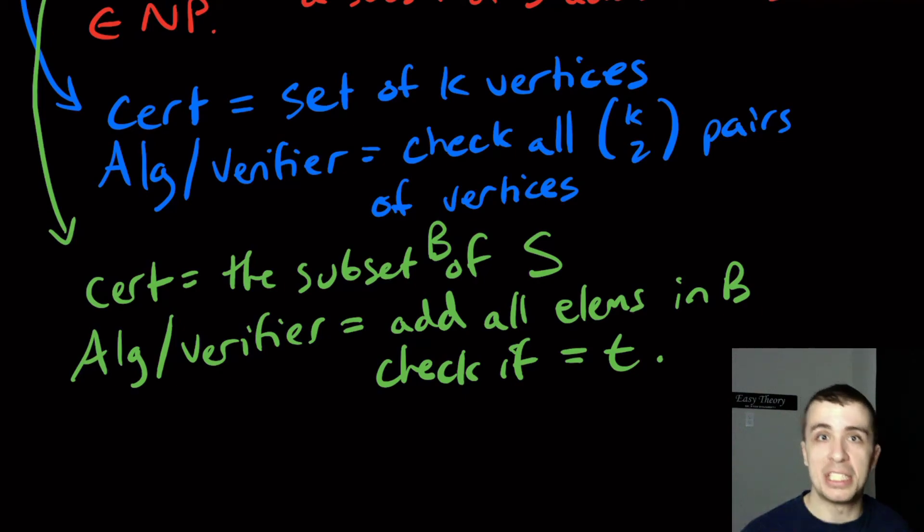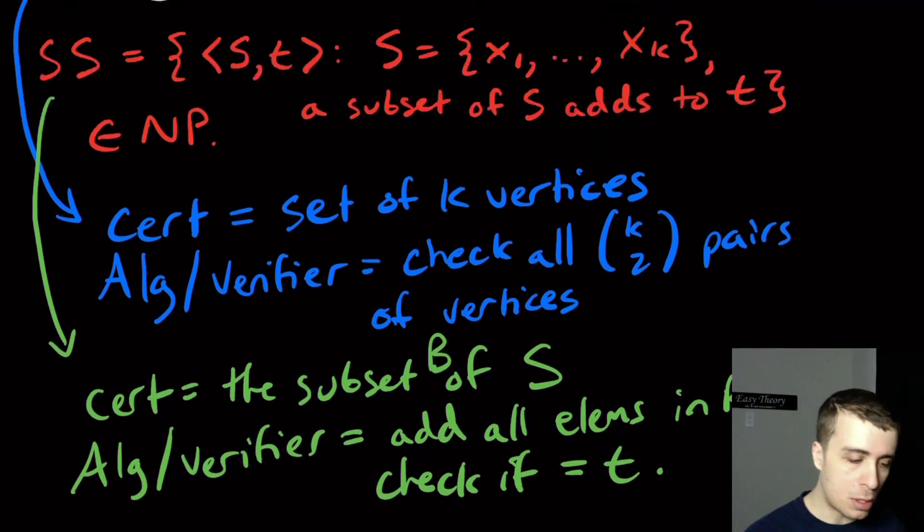If it was just say t and no other stuff, then we would have to worry about the representation of t, whether it's in unary base one or base two, and that's a big question when we deal with this type of thing. But since we have a gigantic set of integers right here compared to just one integer, it's not an issue here. So therefore we have shown that CLIQUE and subset sum are both in NP.